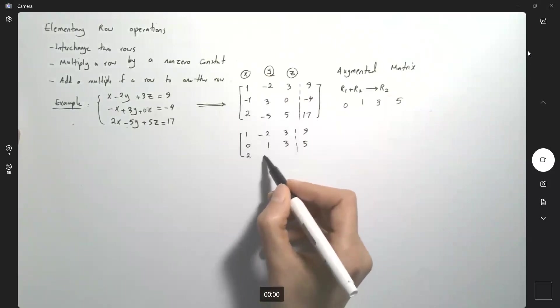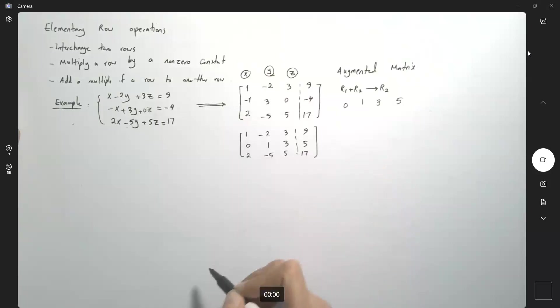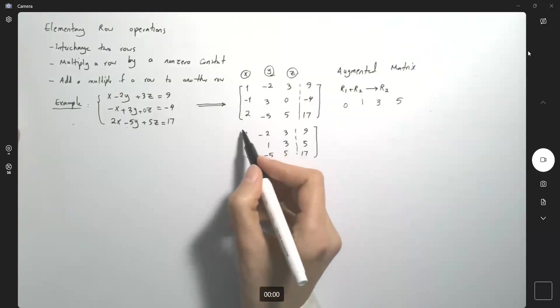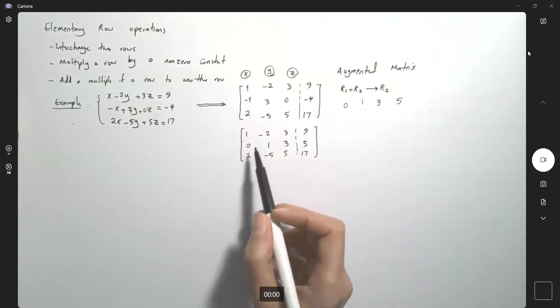Let's keep the last row as it is. So as you can see, I created 0 below 1. My goal is to create another 0 here. If I multiply the first row by negative 2 and add that to the last row, I can create 0 here.